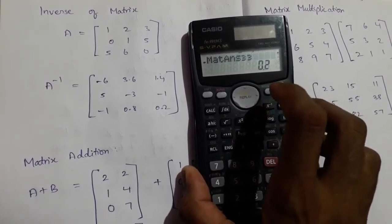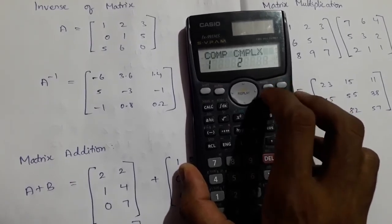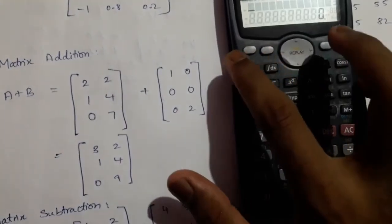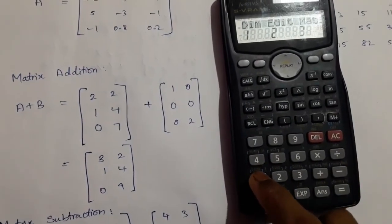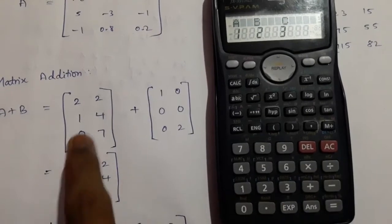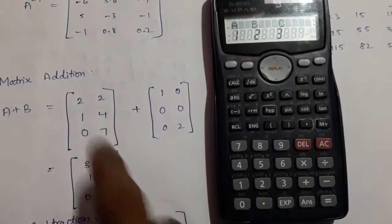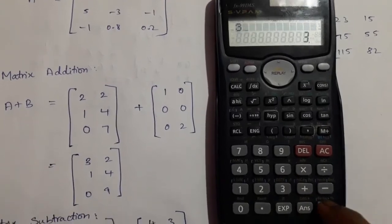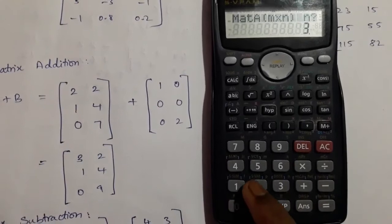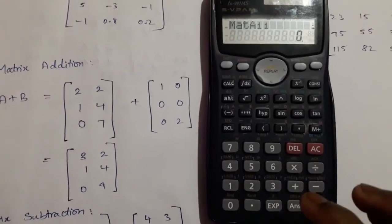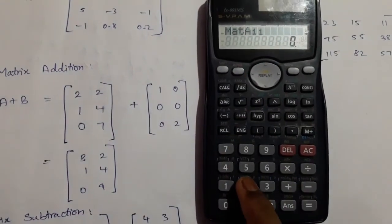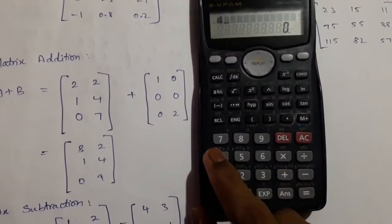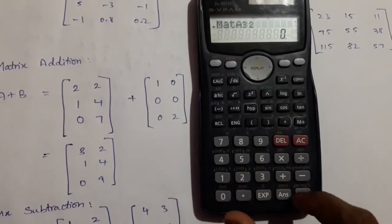Then we want to do matrix addition. For this, press Shift again, press 4, press 1 for dimensions. Set matrix A as 3 rows and 2 columns. Press 1, press 1, then press 3 for 3 rows, press equal. For columns, press 2, press equal. Now input the numbers: 2, 2, 1, 4, 0, 7.